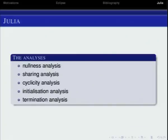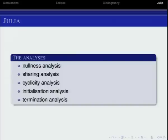We can do nullness analysis, sharing analysis — finding if data structures can share something so modifying one indirectly modifies the other — cyclicity analysis to find if a data structure might contain a loop like a list with a cycle, class initialization analysis showing which classes have been initialized at each program point, and termination analysis — the most complex — which tries to find if methods terminate. Of course this is undecidable, but it works in many cases.